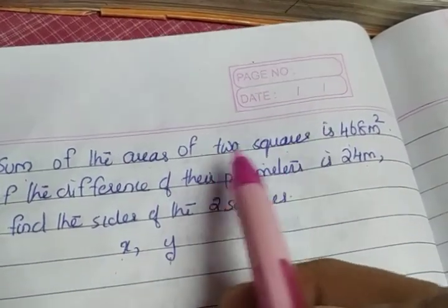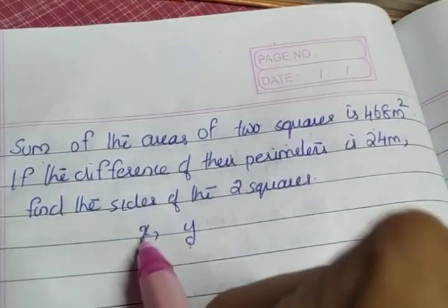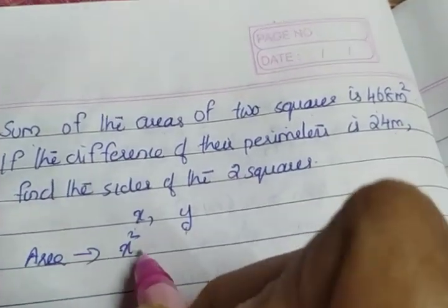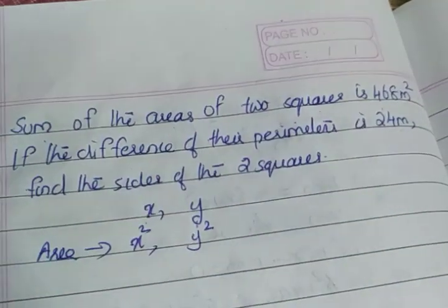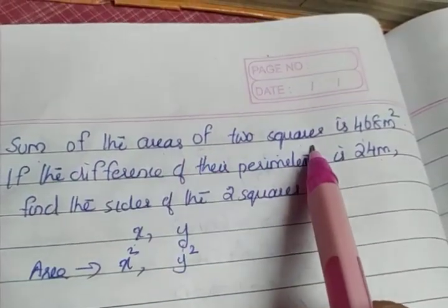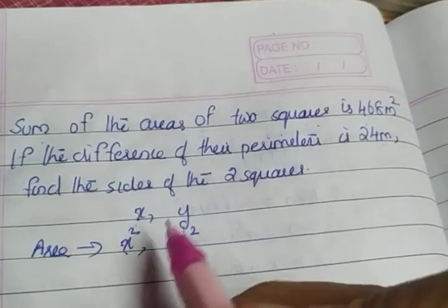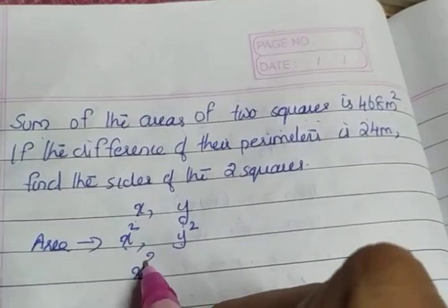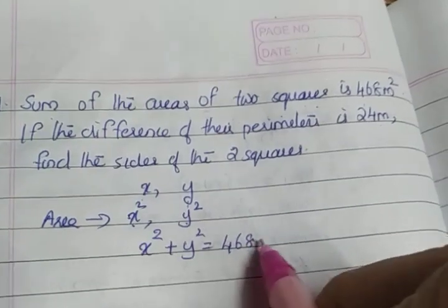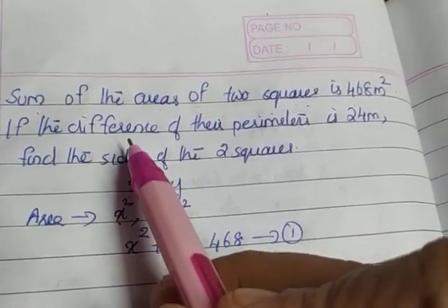The area of the first square with side x is x squared, and the area of the second square with side y is y squared, since the formula for area of a square is side squared. The sum of the areas gives us x squared plus y squared equals 468. Let this be equation number one.